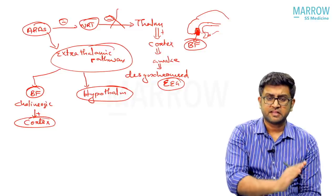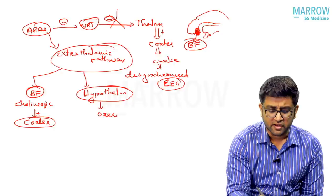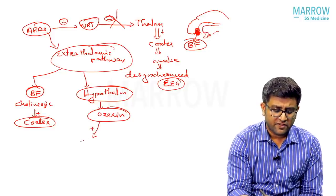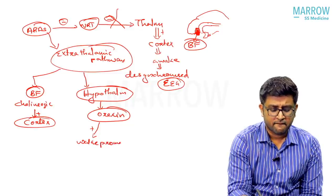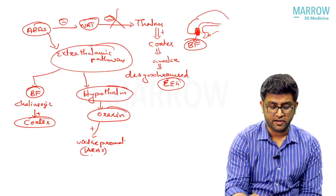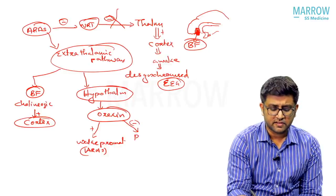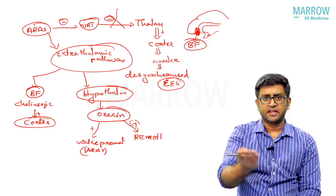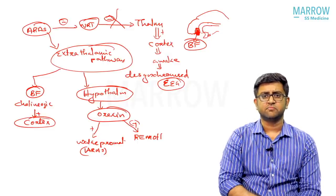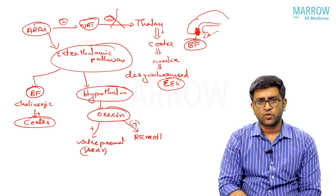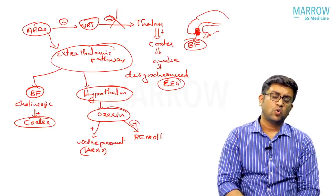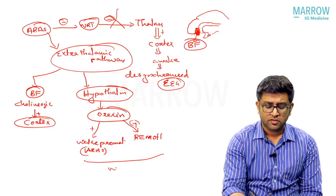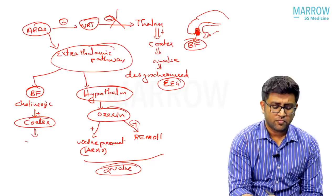Coming back to sleep: basal forebrain is activated, NRT is inhibited, and hypothalamus secretes a hormone known as orexin. The orexin-hypocretin system plays the master role in wakefulness and alertness. Orexin activates the wake-promoting regions of the ARAS, and at the same time inhibits the REM sleep onset area — the REM-on areas. So REM-off is activated. Orexin is basically a wake-promoting neurotransmitter secreted by the hypothalamus, and it gives an overall wake response, making the cortex produce wakefulness.